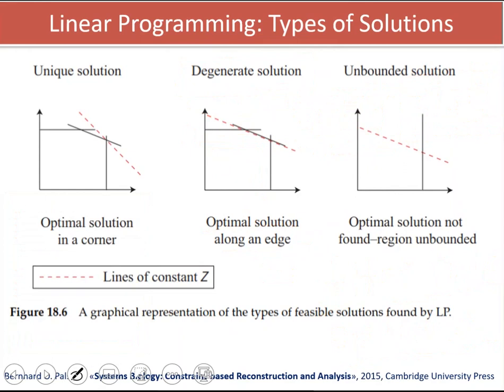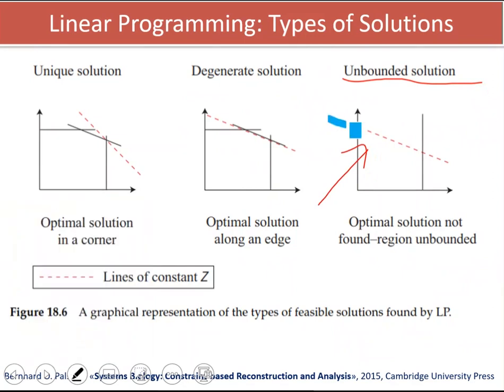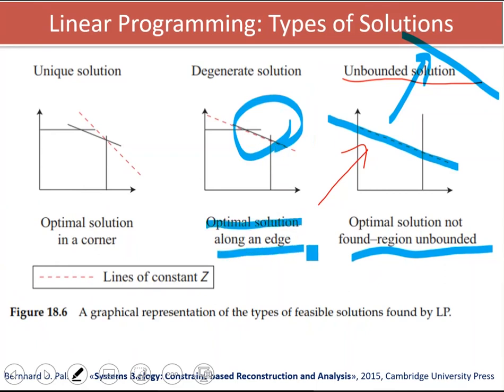One other alternative is unbounded solution. If you don't have enough constraints in this case, for example, if you are trying to maximize the objective function, you can push the objective function line here till infinity, because there is no bound there. So we have an unbounded solution. We need to be sure that we have really properly bound the solution space. And we should be aware of this problem of optimal solution lying on an edge, the problem also known as alternate optima.